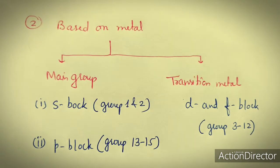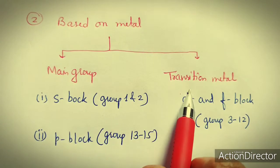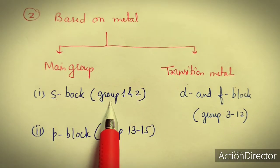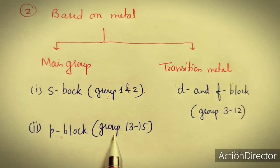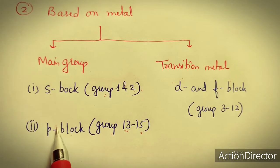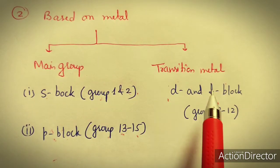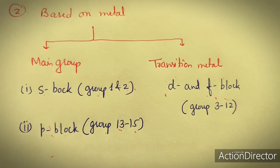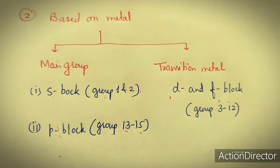The second classification is based on metal type. The metal can be a main group element or a transition metal. Main group includes s-block elements — group 1 and 2, the alkali metals and alkaline earth metals — and p-block elements from groups 13 to 15. Transition metals include d-block and f-block (inner transition) metals. Based on the metal, compounds are called main group organometallic compounds or organometallic compounds of transition metals.